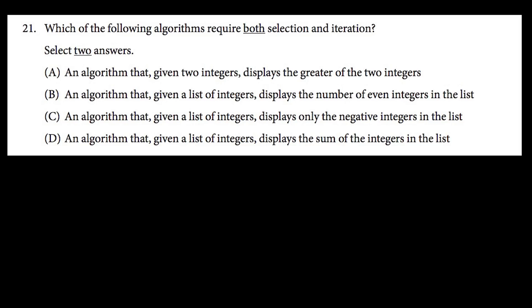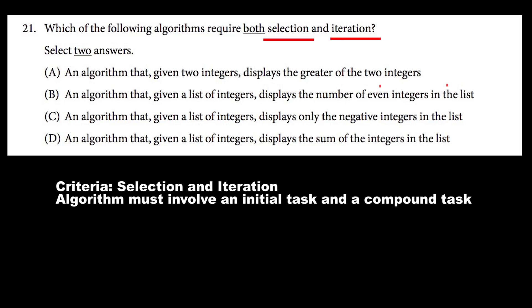The question says: which of the following algorithms require both selection and iteration? Select two answers. This is one of those questions at the end of the test where we'll have to select two answers. Before we even go into the options, let's take a look at our question more deeply. It asks for an algorithm that involves both selection and iteration, so there are two facets of a task being accomplished. So let's take a look at our options now.